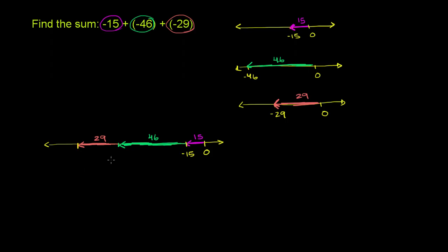Since all of these have the same sign, we can say this is the same as the absolute value of negative 15, which is 15, plus the absolute value of negative 46, which is 46, plus the absolute value of negative 29, which is 29 — but then take the negative value of the result. So let's add: 15 plus 46 plus 29. Five plus 6 is 11, plus 9 is 20 — carry the 2. Two plus 1 is 3, plus 4 is 7, plus 2 is 9. So we get 90.